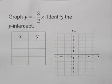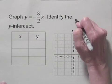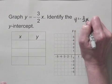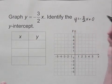Graph y equals negative 3 halves x. Identify the y-intercept. Well, we can think of y equals negative 3 halves x as y equals negative 3 halves x plus 0.